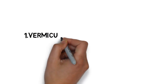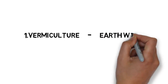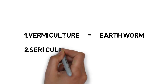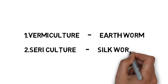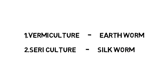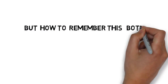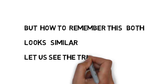Here the branches: vermiculture is related to earthworm, and sericulture is related to silkworm. Both look similar, both relate to the worm family, so you will surely be confused. We will make a trick to remember this — both look similar, so let us see the trick.